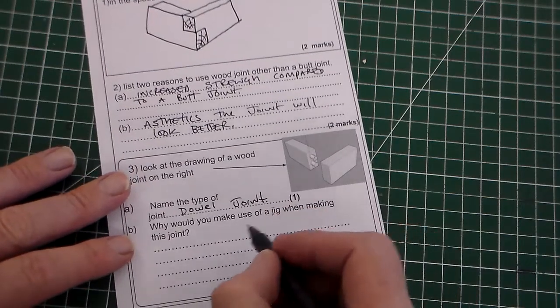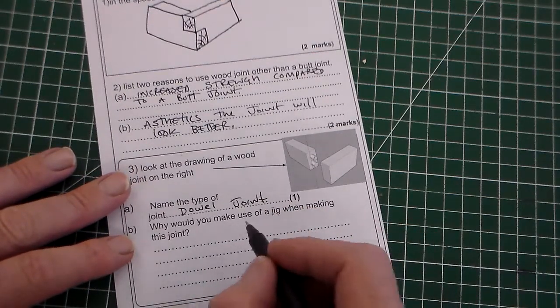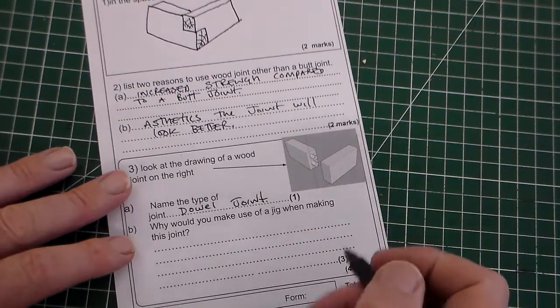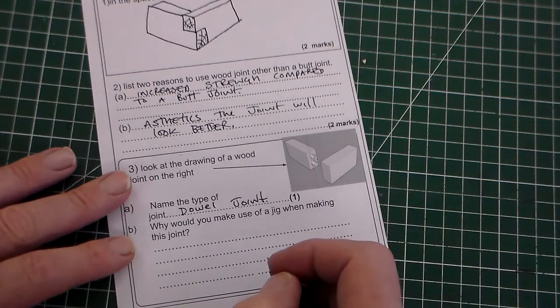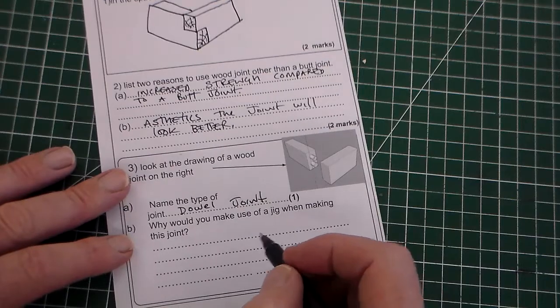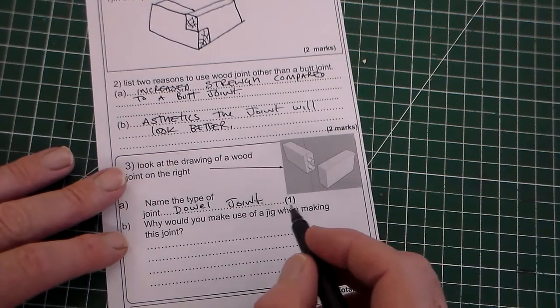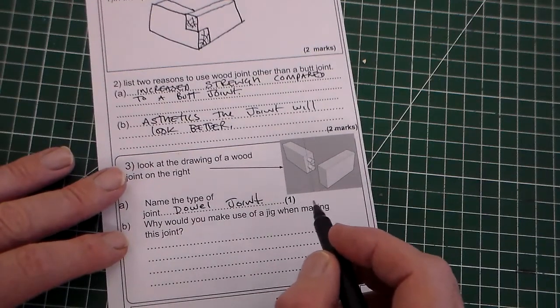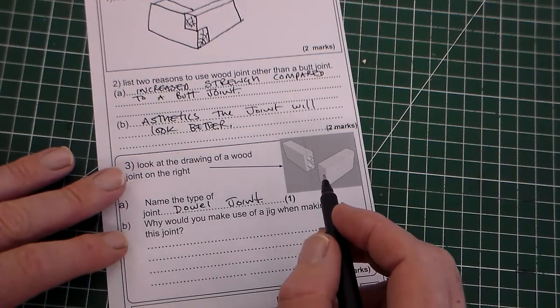Why would you make use of a jig when making this joint? So that's part B. This is probably the most difficult bit. You can see there's three marks in this.